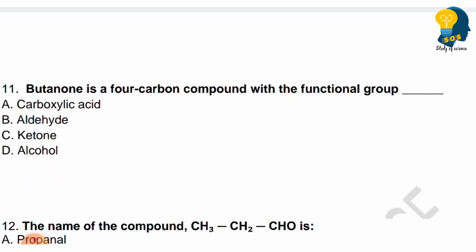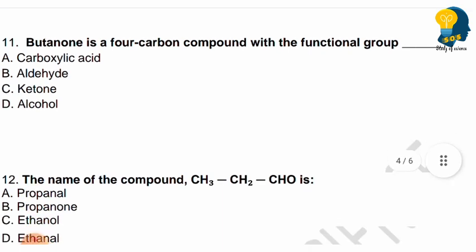Next question: Butanone is a four-carbon compound with which functional group? Options are carboxylic acid, aldehyde, ketone, or alcohol. The suffix '-one' indicates which functional group? Identify the correct answer.